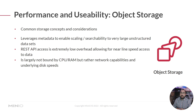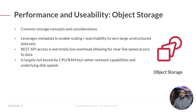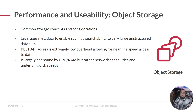For object storage, the common storage concepts apply, but additionally object storage leverages metadata to enable scaling and searchability to very large unstructured data sets. You can tag your data in a specific way and make it very searchable no matter how much data you have. The REST API access is extremely low overhead, allowing for near line-speed access to the data, so you get close to full throughput to that MinIO cluster or other S3 cluster.